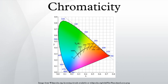Chromaticity is an objective specification of the quality of a color regardless of its luminance. Chromaticity consists of two independent parameters, often specified as hue and colorfulness, where the latter is alternatively called saturation, chroma, intensity, or excitation purity.